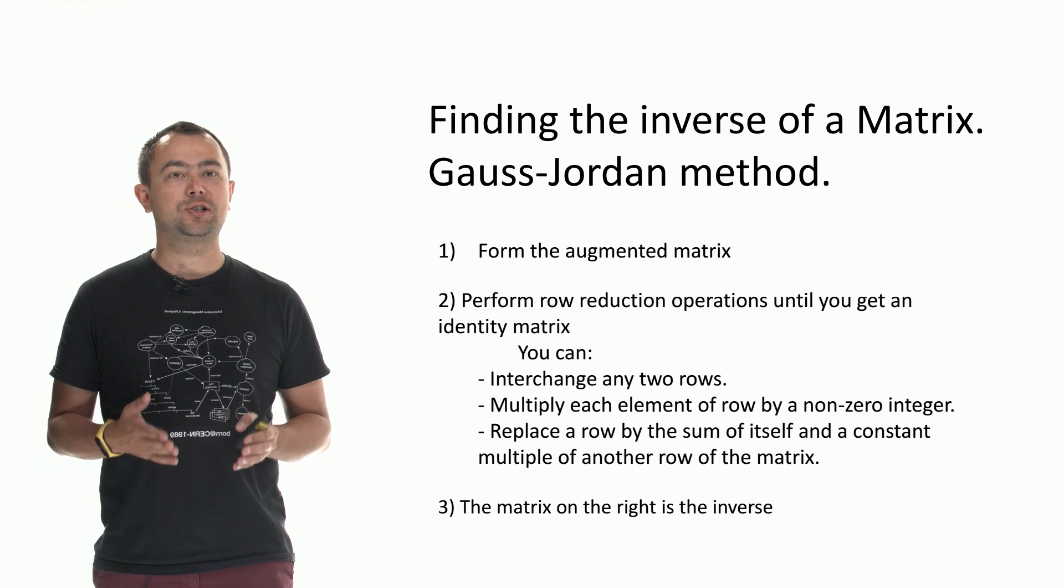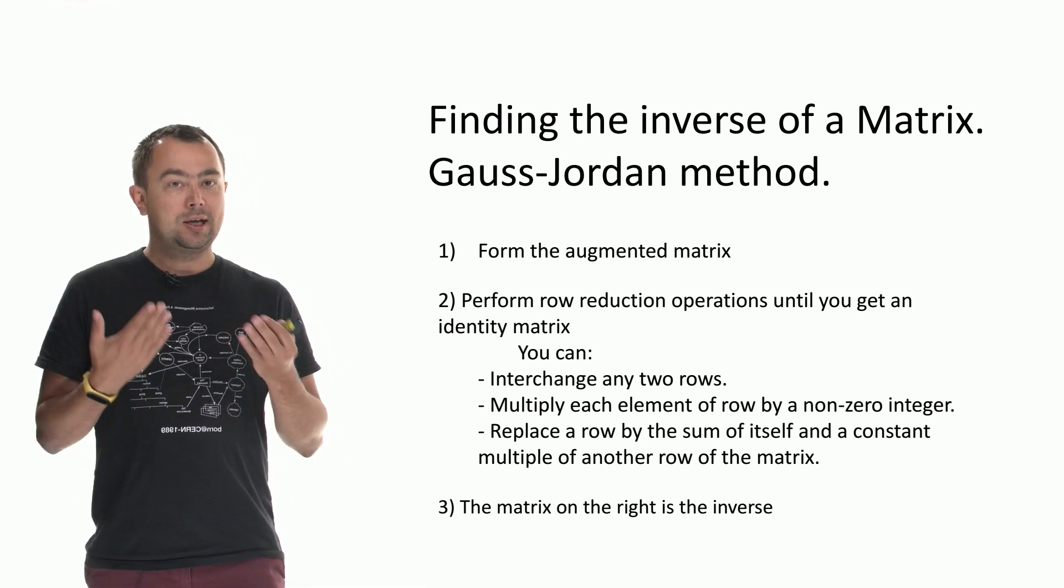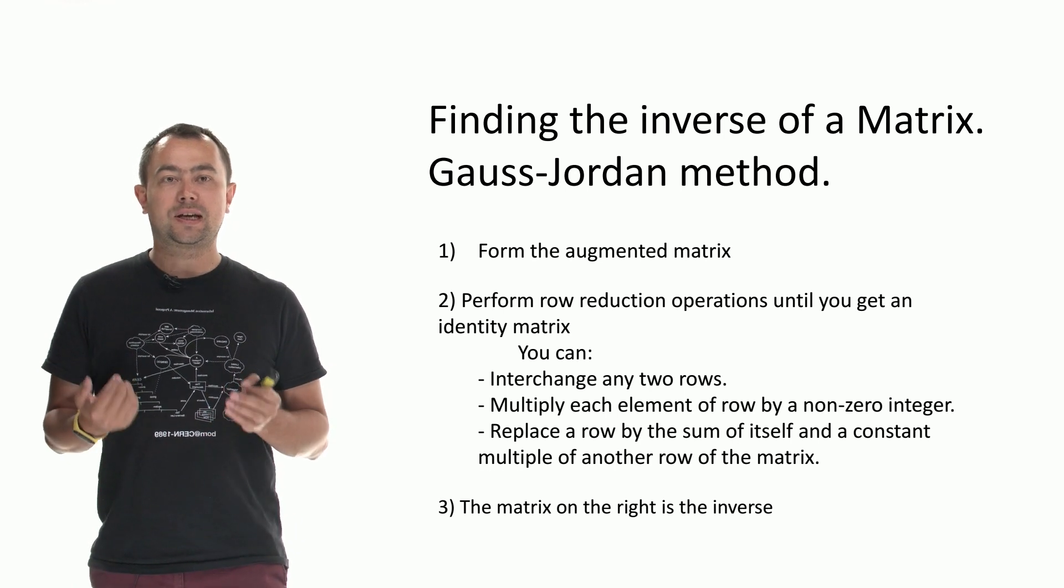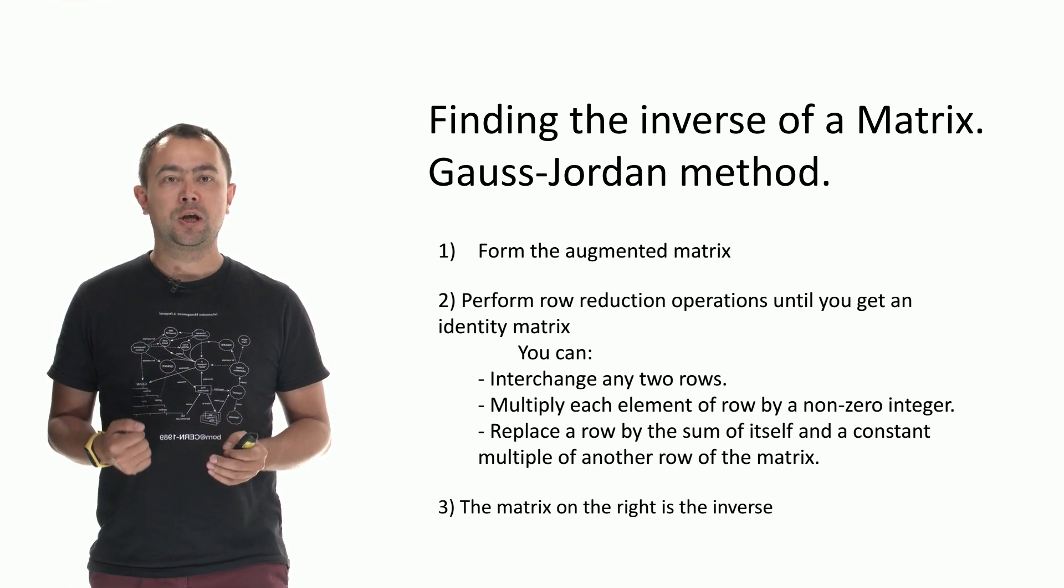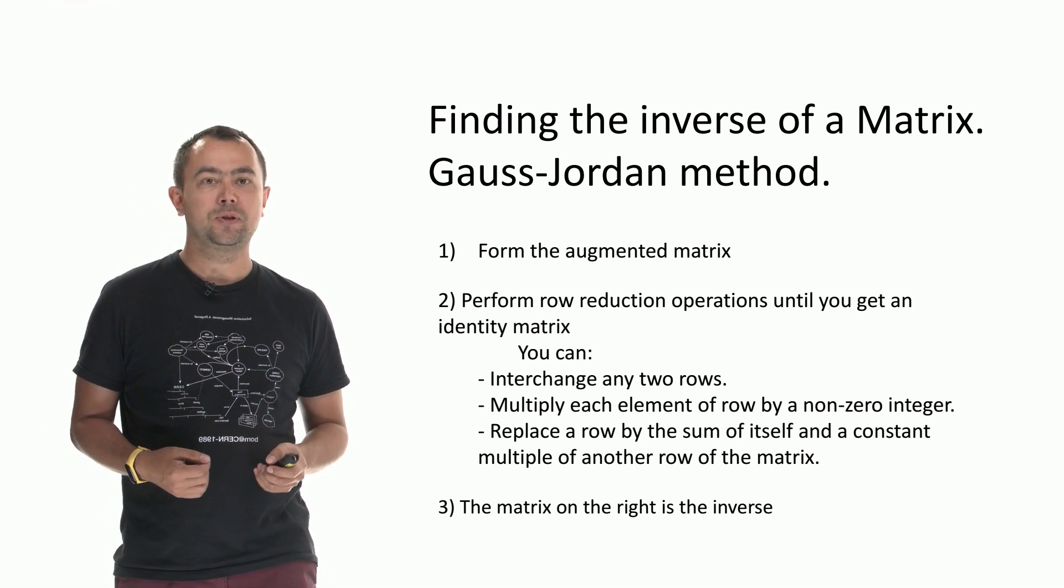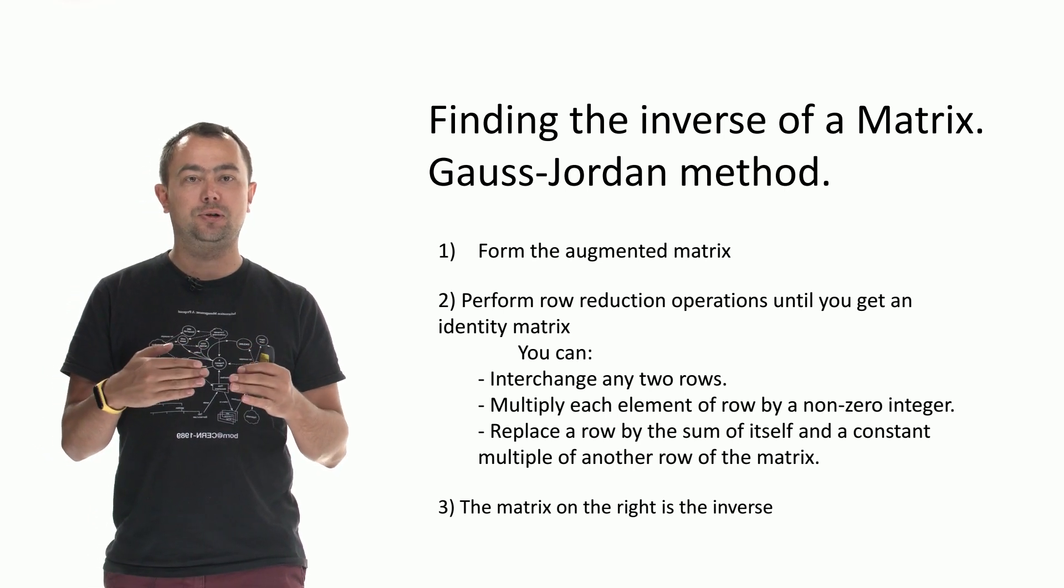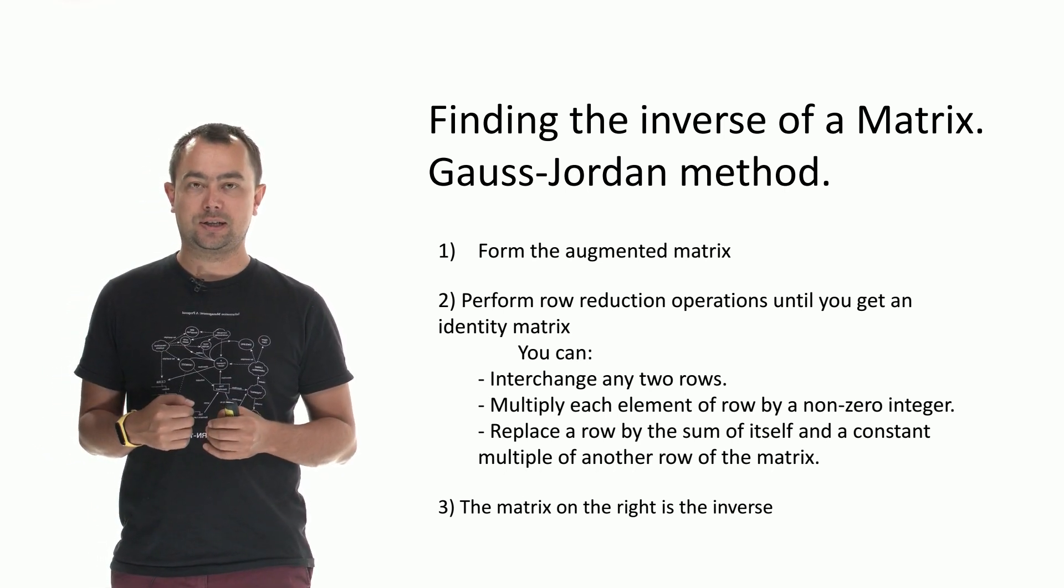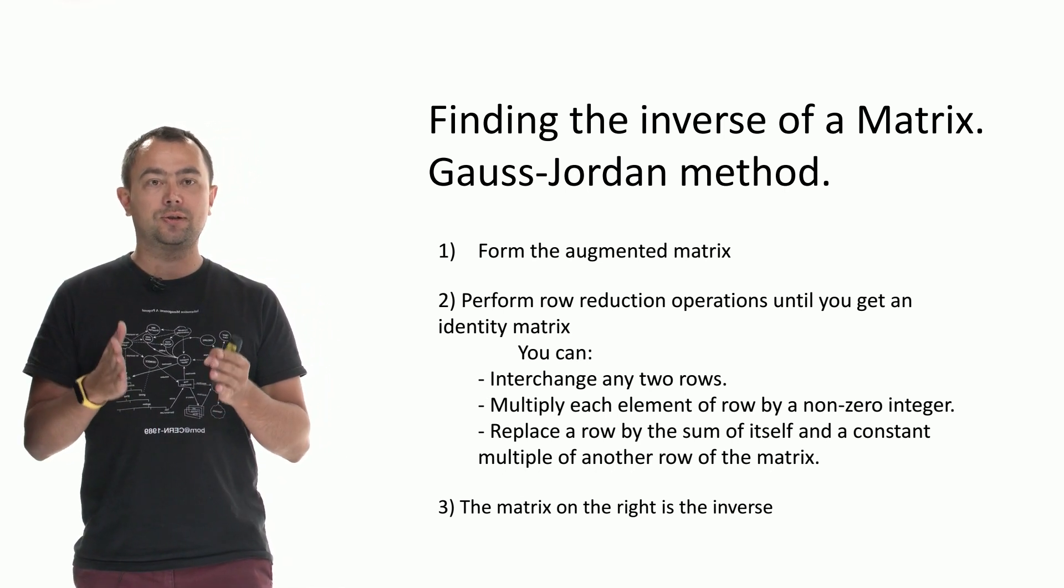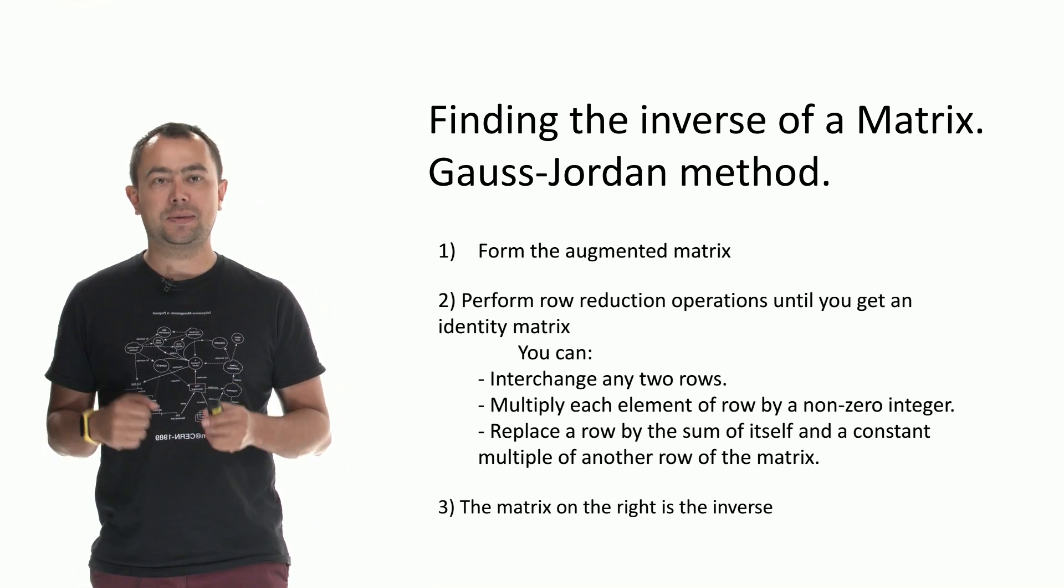Then we perform row reduction operations until we get an identity matrix. In the row reduction operations you can interchange any two rows, you can multiply each element of a row by a non-zero integer, you can replace a row with a sum of itself and a constant multiple of another row of the matrix. The matrix on the right is now the inverse of the original matrix.